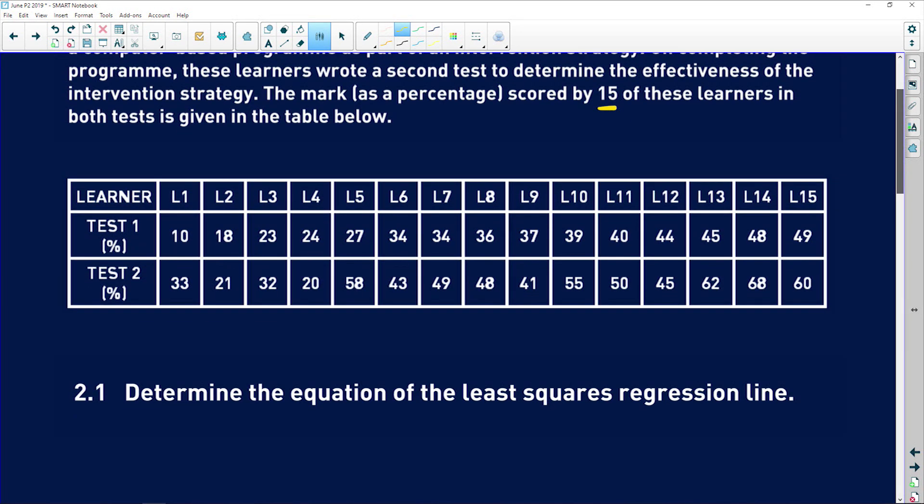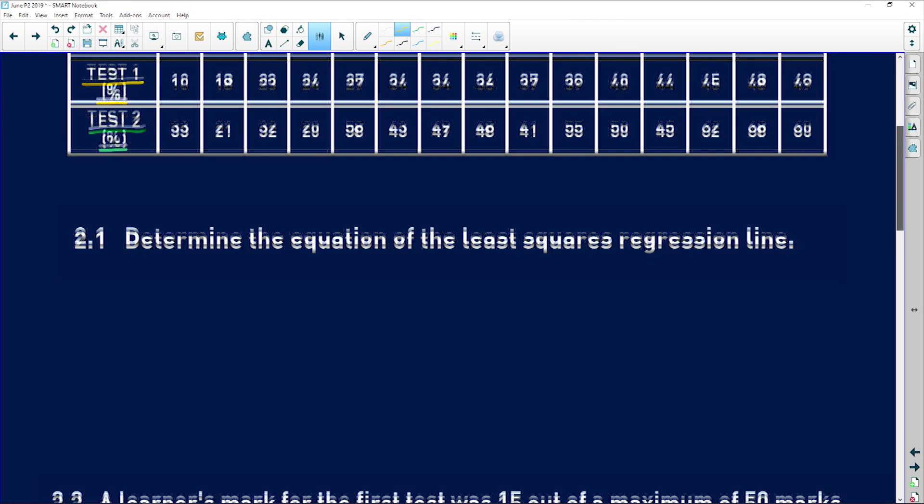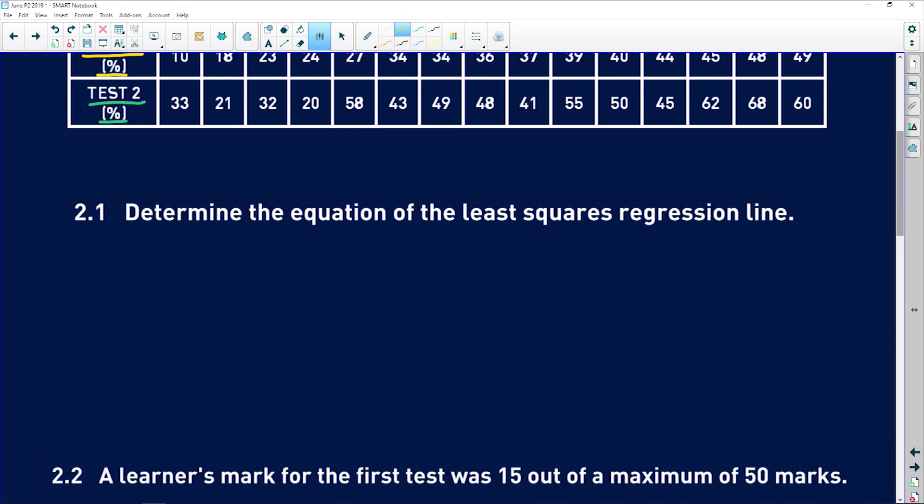So these learners wrote test one, and then teachers decided that because none of them got above 50%, they needed to go and do this computer thing. And then the learners wrote another test, test two, and obviously the teachers now want to compare the marks and see how effective the computer thing was in improving their marks. So 2.1 says determine the equation of the least squares regression line.